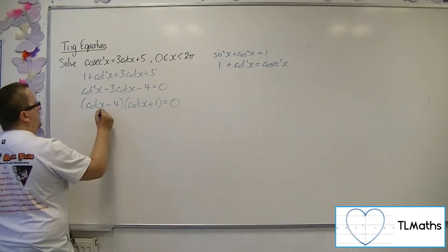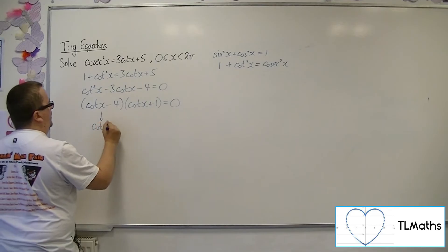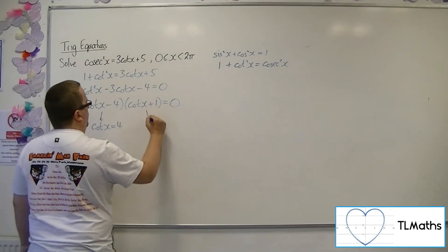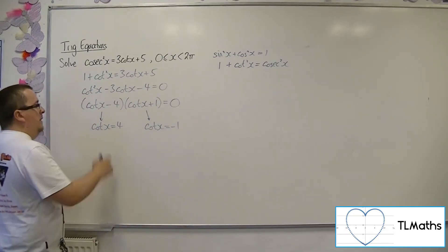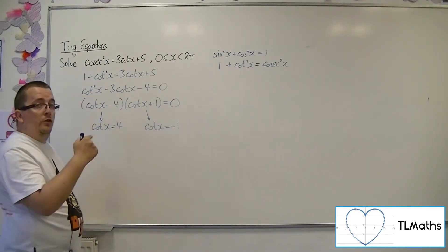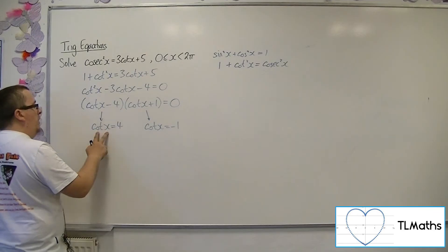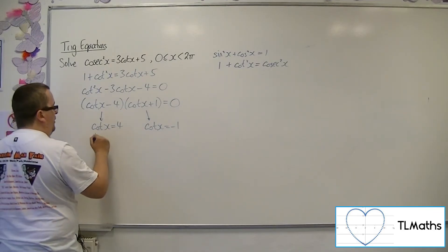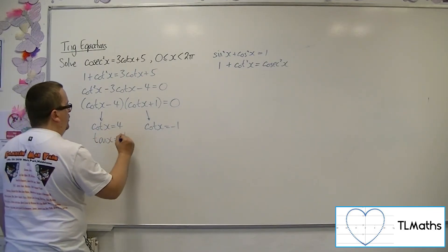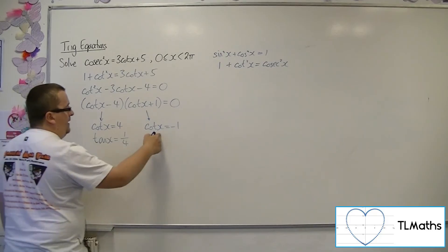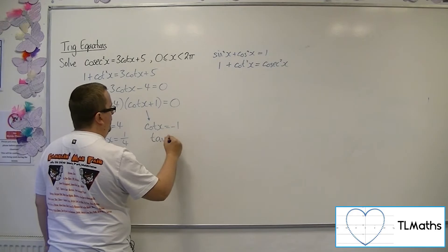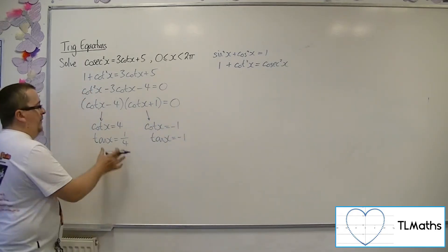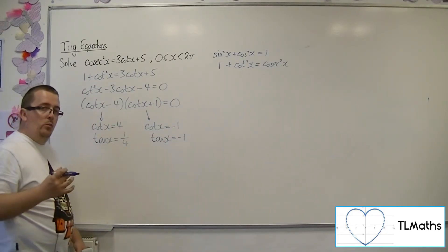So either cot x is equal to 4 or cot x is equal to minus 1. Now, cot is 1 over tan. So 1 over tan equals 4, so tan equals a quarter. And here, if 1 over tan is equal to minus 1, then tan must be equal to minus 1. So these are the two equations that I actually want to solve.